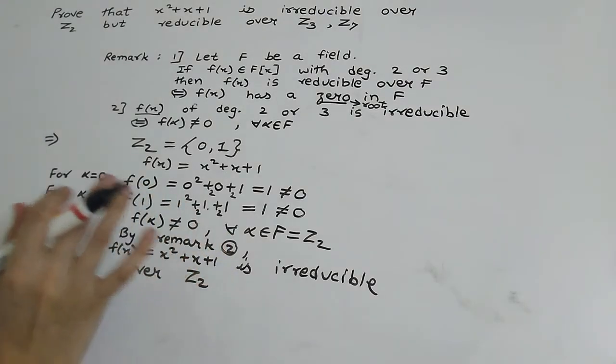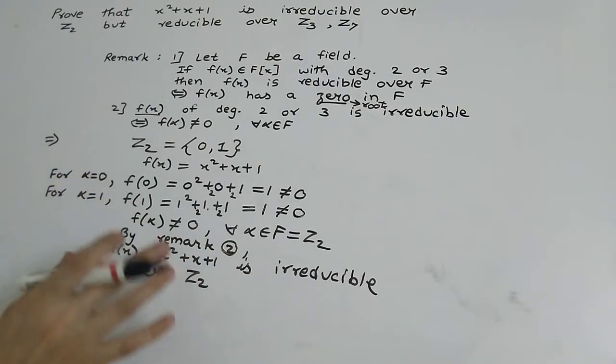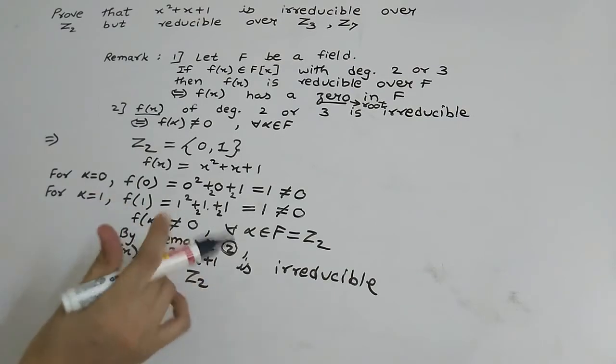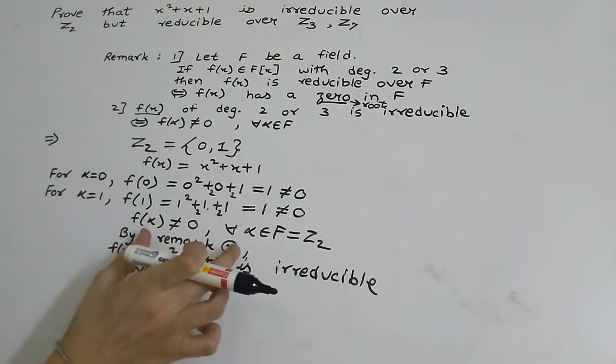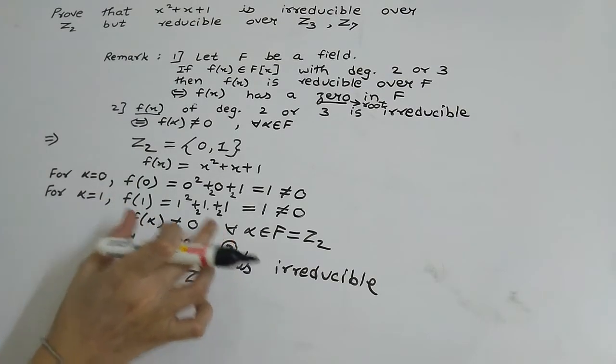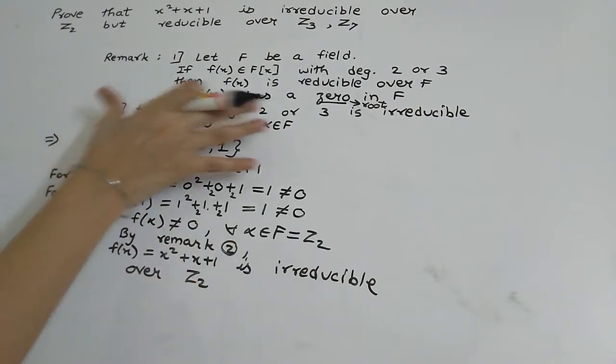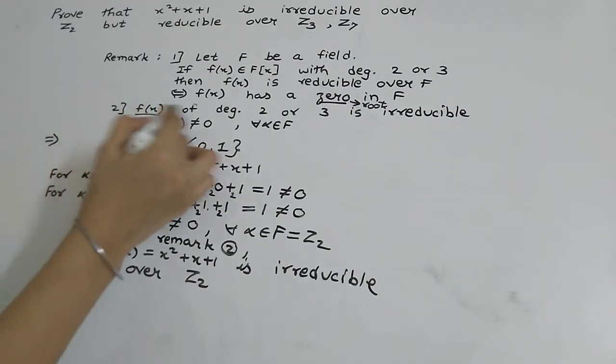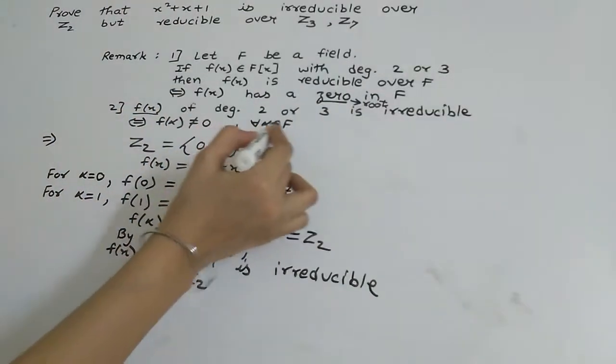If you are asked this question in an exam, instead of just citing the remark number, you should write the full statement of Remark 2 about f(x) of degree 2 or 3.